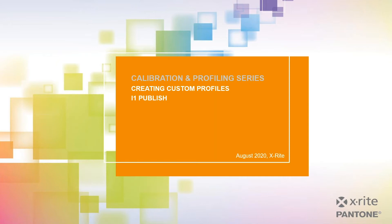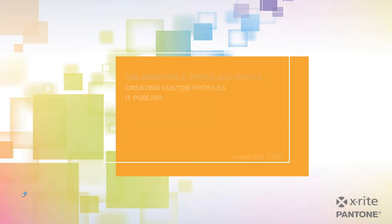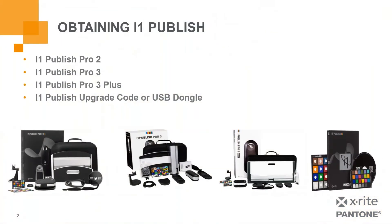Hi everyone. My name is Darius Anderson, and today I will be discussing what is the i1Publish license and the benefits that come with it. i1Publish is a license package for the i1 Profiler software. It is the included license when you're purchasing either the i1 Publish Pro 2, i1 Publish Pro 3, or the i1 Publish Pro 3 Plus. You can also purchase the i1 Publish license as an upgrade code for any i1 Basic or i1 Photo product.